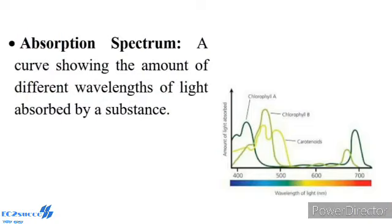Absorption Spectrum: The curves showing the amount of different wavelengths of light absorbed by a substance is called absorption spectrum. The amount of absorption of wavelength of light is studied with the spectrophotometer. The absorption spectra of chlorophyll A and B show that they absorb maximum light in the blue-violet and red wavelength.